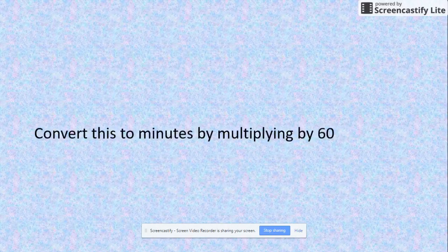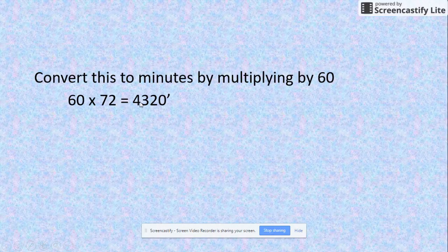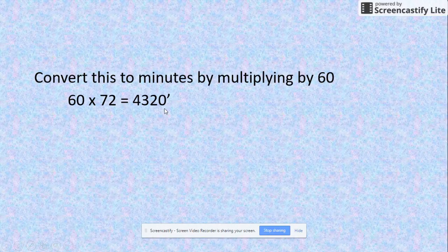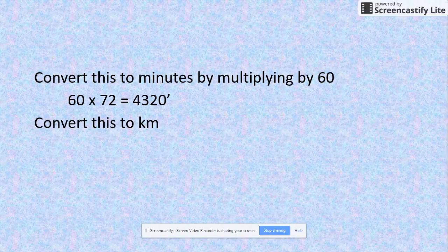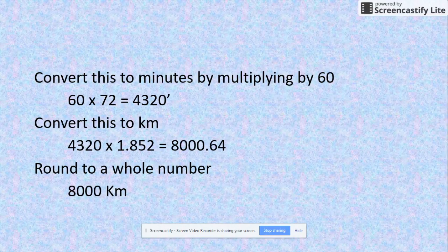What do we do with that? We take our 72 and convert it to minutes by multiplying by 60, like we did before. So 60 times 72 gives us 4,320 minutes—we put that little dash there to show that's minutes. From then on, we take our minutes and convert them into kilometers by multiplying by 1.852, which you've already written down. You get 8000.64, and then just round it to a whole number, so we would make this 8000 kilometers.